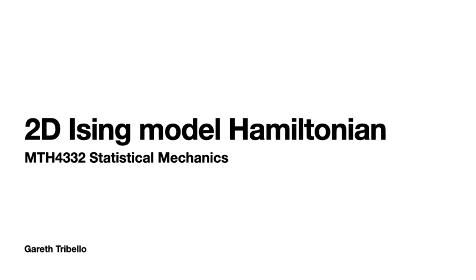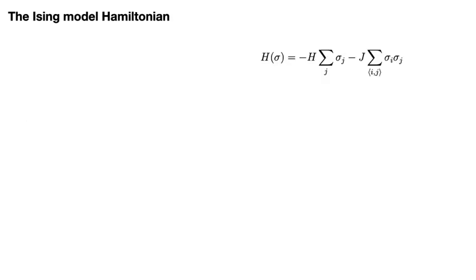So, the Hamiltonian for the 2D Ising model is given by the expression shown here. You will see this expression written out in different ways in different textbooks. What I hope to convince you by the end of this video is that what we are computing here is not very difficult. It is, however, difficult to express what we are doing using simple mathematical notation.